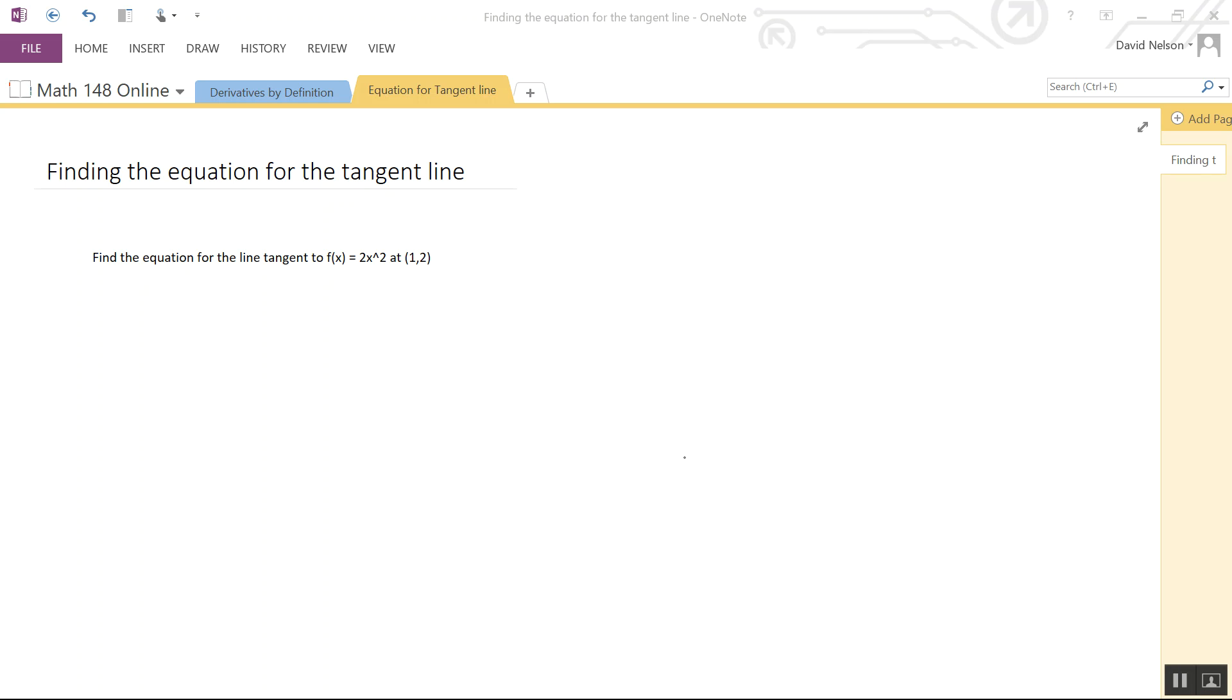We want to find the equation for the tangent line to f(x) = x² at the point (1,2). We're trying to find the equation for a line - that's the key thing we're looking for.